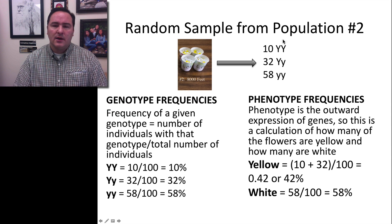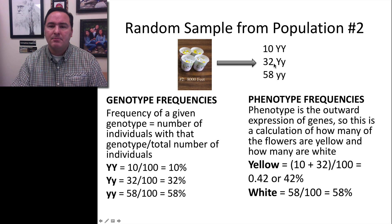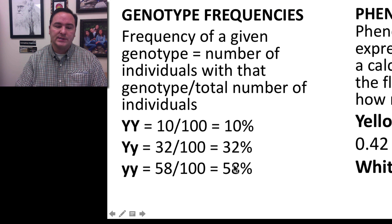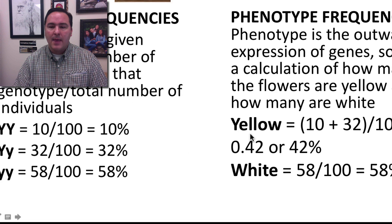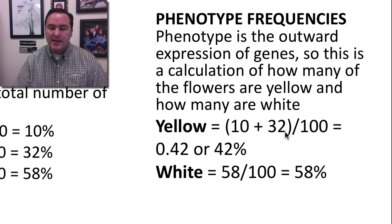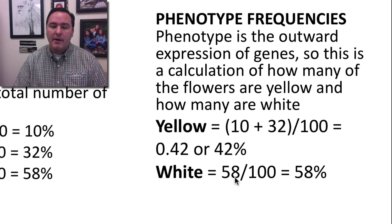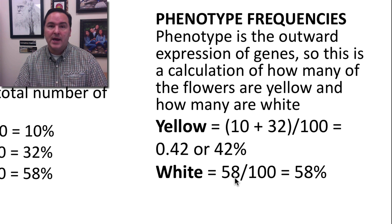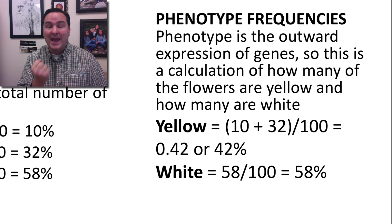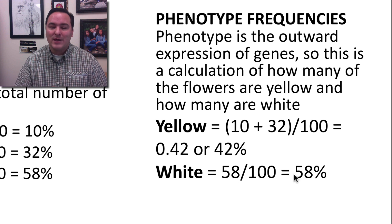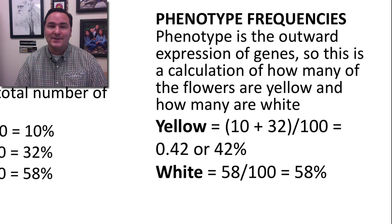Population 2 is different. When I sample, I get 10 big Y big Y, 32 big Y little y, and 58 little y little y. So genotypic frequencies are 10%, 32%, and 58%. For phenotypic frequencies, yellow flowers are big Y big Y plus big Y little y: 10 + 32 = 42% of the population has yellow flowers. White flowers, which are little y little y, make up 58%, or 0.58.